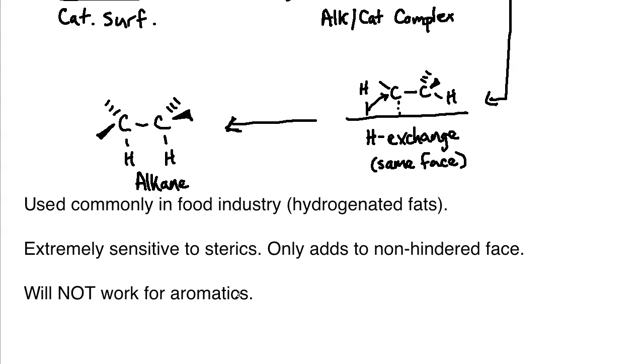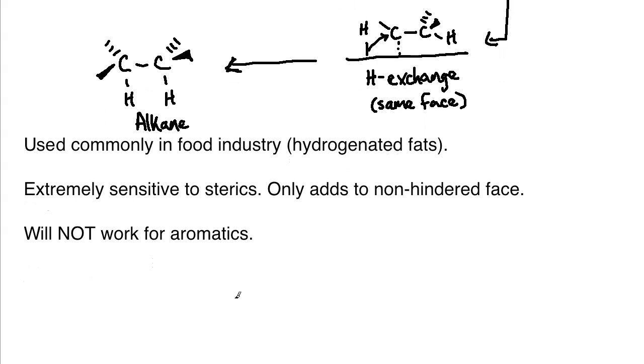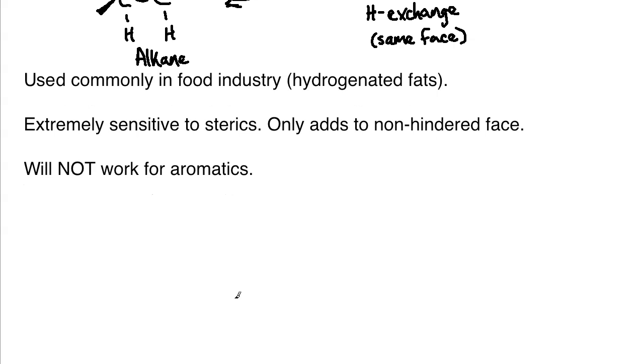In terms of the mechanism itself, it is extremely sensitive to sterics, sterics being bulky groups, and it will only add the hydrogens to a non-hindered face of the molecule. There are times where you could get one side of the double bond that is going to have quite a bit of steric hindrance or larger groups that might be preventing the hydrogenation from occurring on that particular face. Just keep in mind that this reaction is sensitive to sterics when it's undergoing the mechanism.